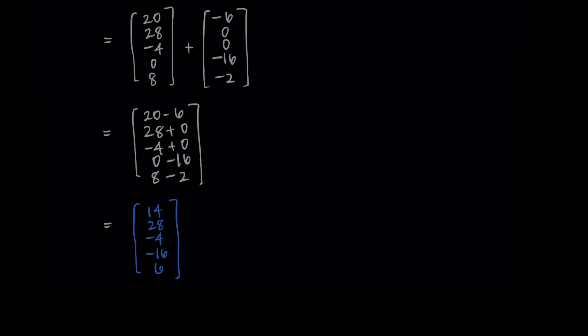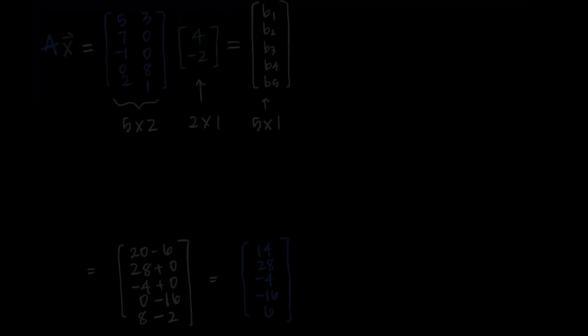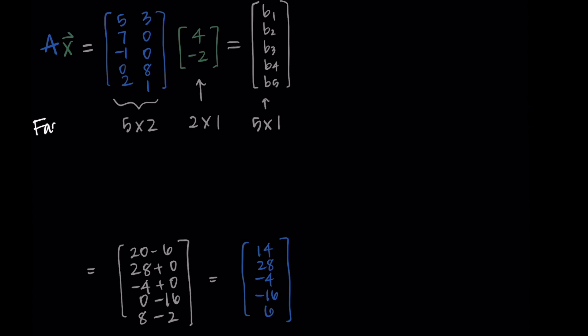All right so this is just fine we got our answer but I want to show you a bit of a faster method that we often use once we become more fluent with these ideas. So starting with our original problem we have A times x and what I'm going to do is multiply out each column by the vector row by row. So I'm going to do the first row of A times our vector x. So we do 5 times 4 plus 3 times negative 2. And that's our first entry of our resulting vector.